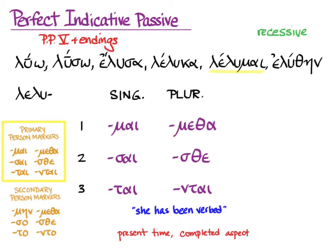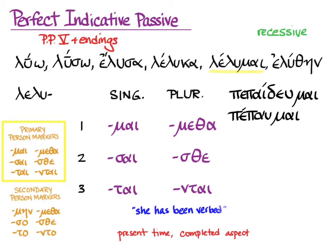Remember how, a couple of videos ago, I was so delighted at how easy perfect indicative passive is, since you just slapped those primary person markers on the clean little stem of the fifth principal part. That works great on many verbs: paideuo — fifth principal part, pepaideumai; pauo — pepaumai; thuo — tethumai. They all work great because when you chop off the -mai ending, the stem remaining ends with a vowel.